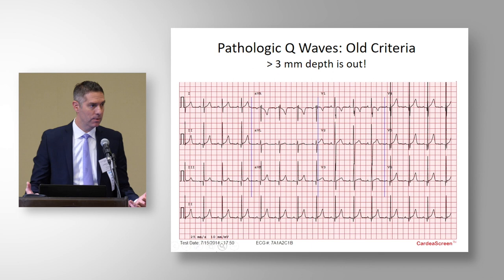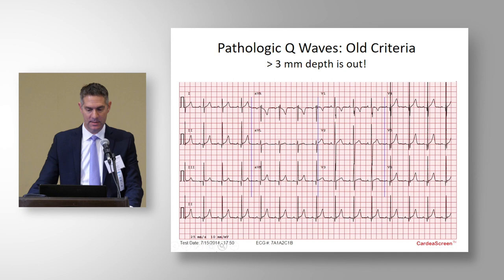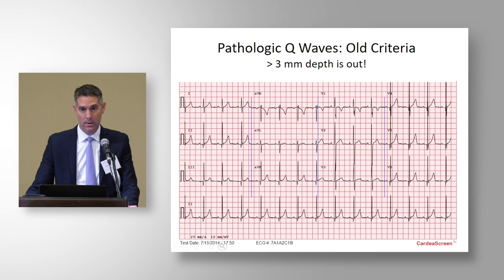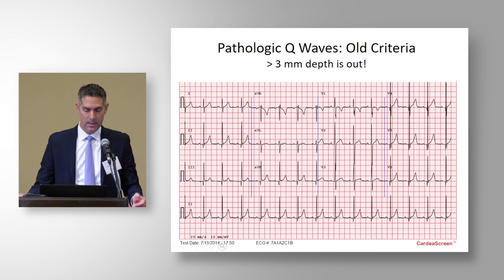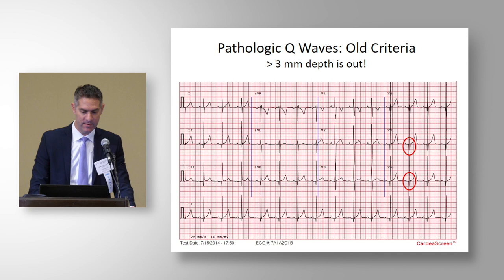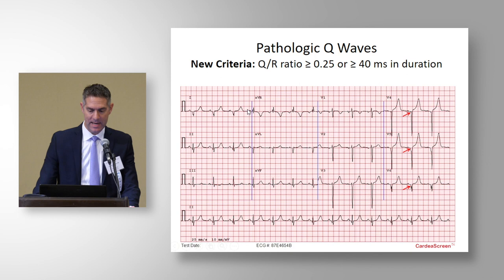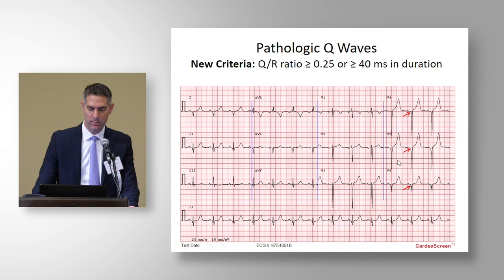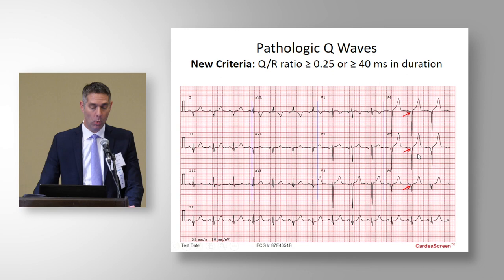Let's talk about the new criteria for pathologic Q-waves. The old criteria is out — previously greater than three millimeters in depth or duration greater than 40 milliseconds was considered abnormal. The problem is that athletes or those with LVH often had long, skinny Q-waves, so we frequently called these ECGs abnormal and never found pathology. The new criteria looks at a Q-to-R ratio of 25% or 0.25 — where the Q wave is greater than 25% of the ensuing R wave — or greater than 40 milliseconds in duration, meaning a wide Q wave.